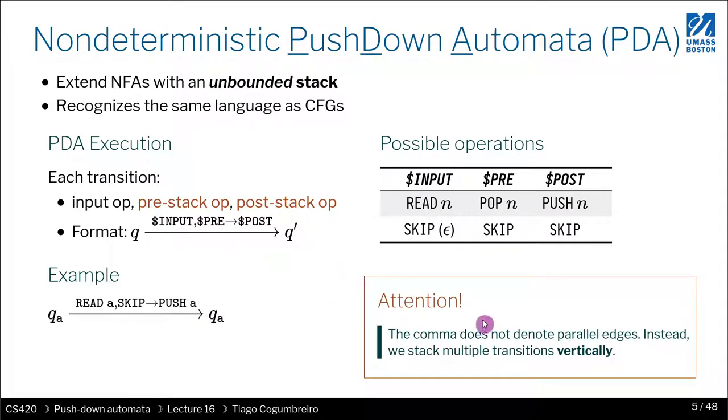So one thing to be mindful is that in NFAs a comma means two things. It means either you do this or you do that. But in a PDA, a comma is used in the notation to separate the read operation from the pre and posts. So this comma does not mean two things. It just means it's part of each thing. So what happens if you want to do two operations on an edge? You stack them one above the other vertically.